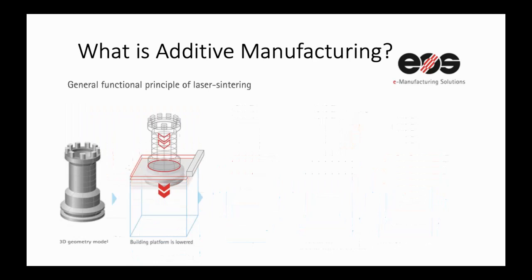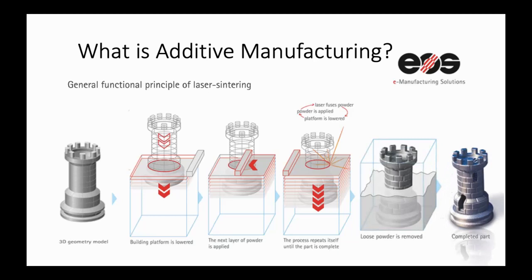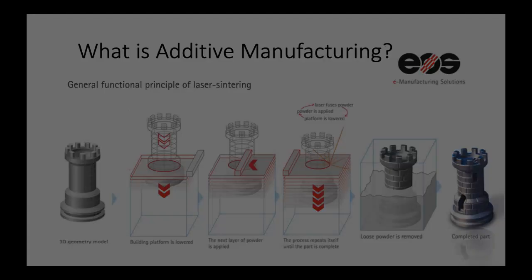In this process, a laser source melts a thin layer of metal powder that forms the cross-section of the desired objects. The first step is to create a 3D model, which is sliced in layers of varying thickness, depending on the final desired quality.